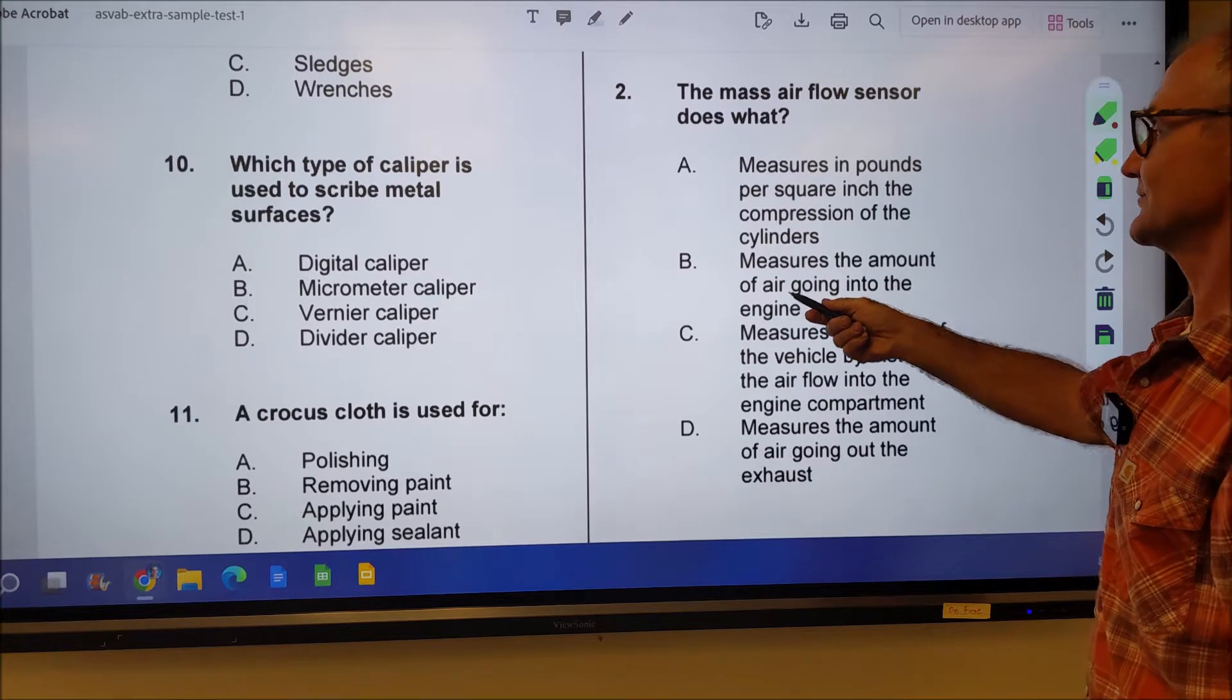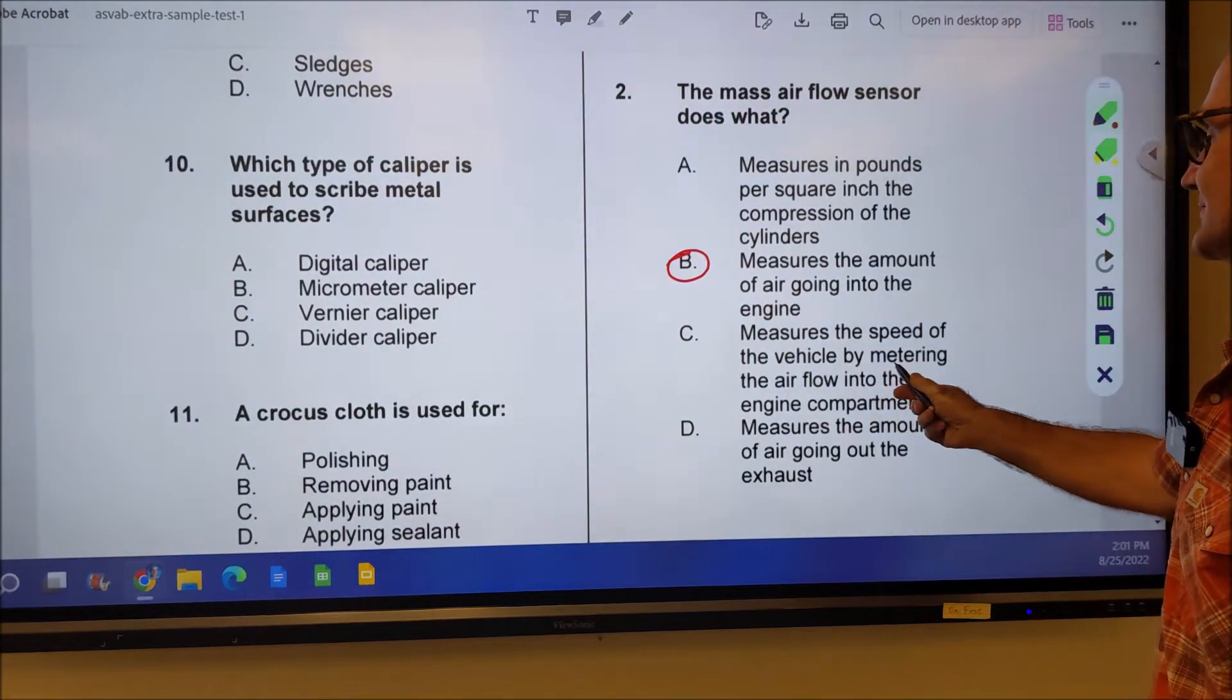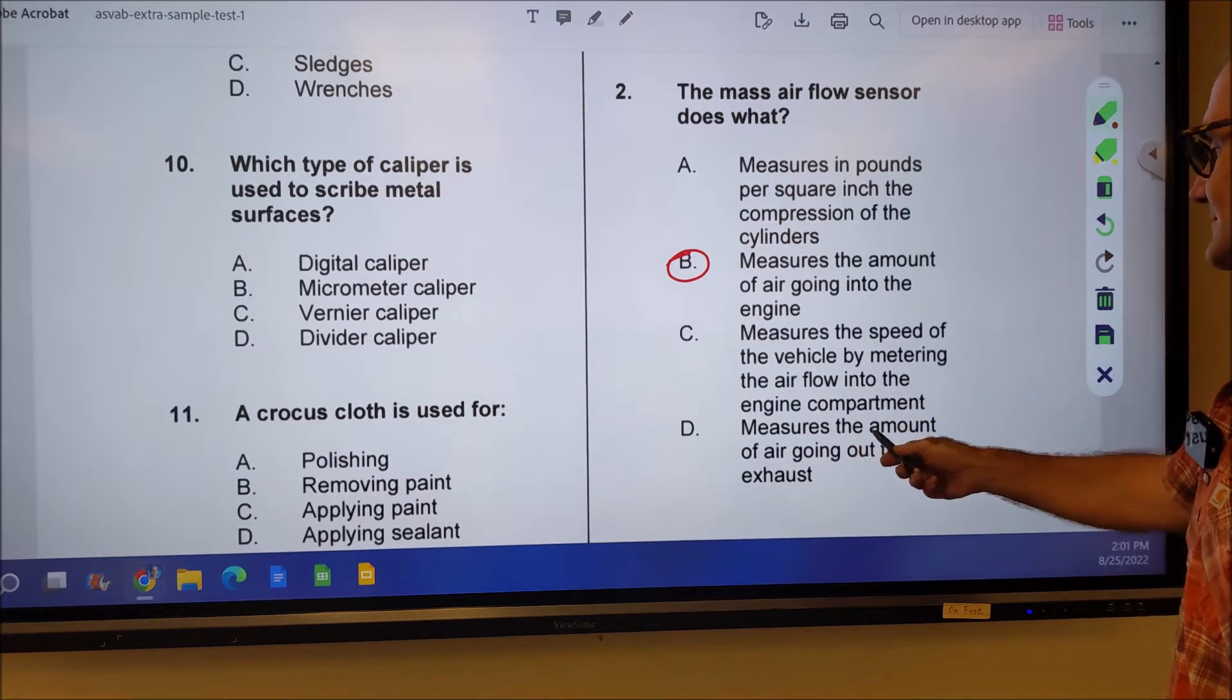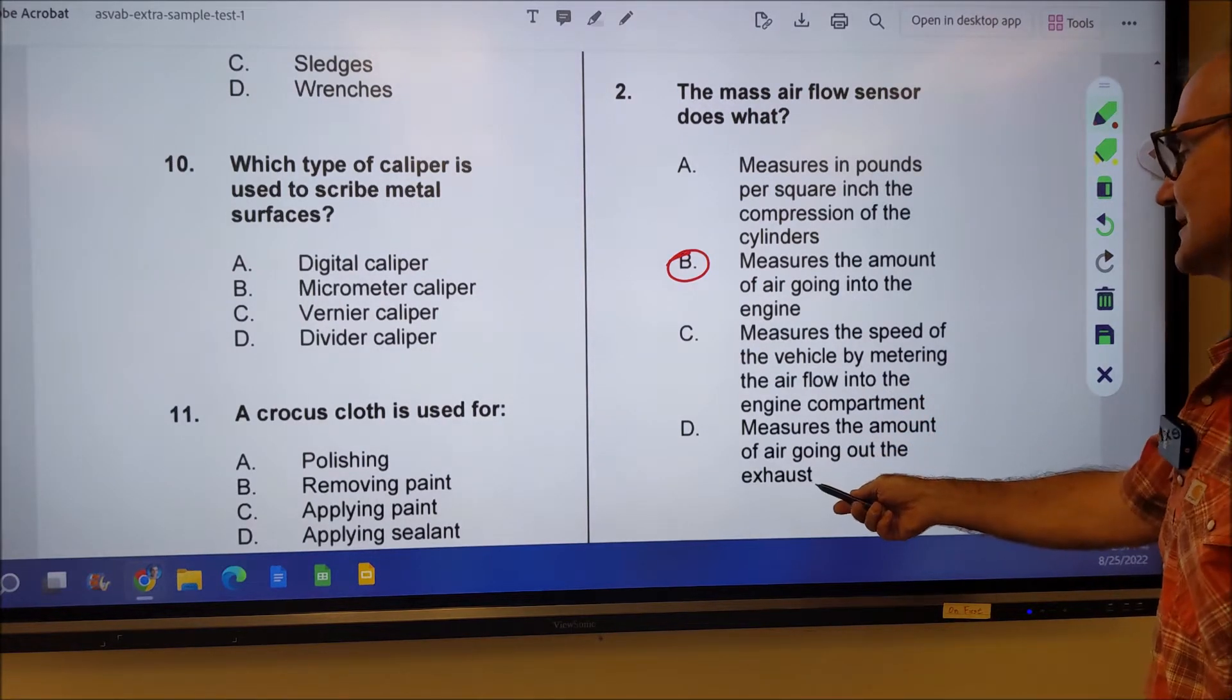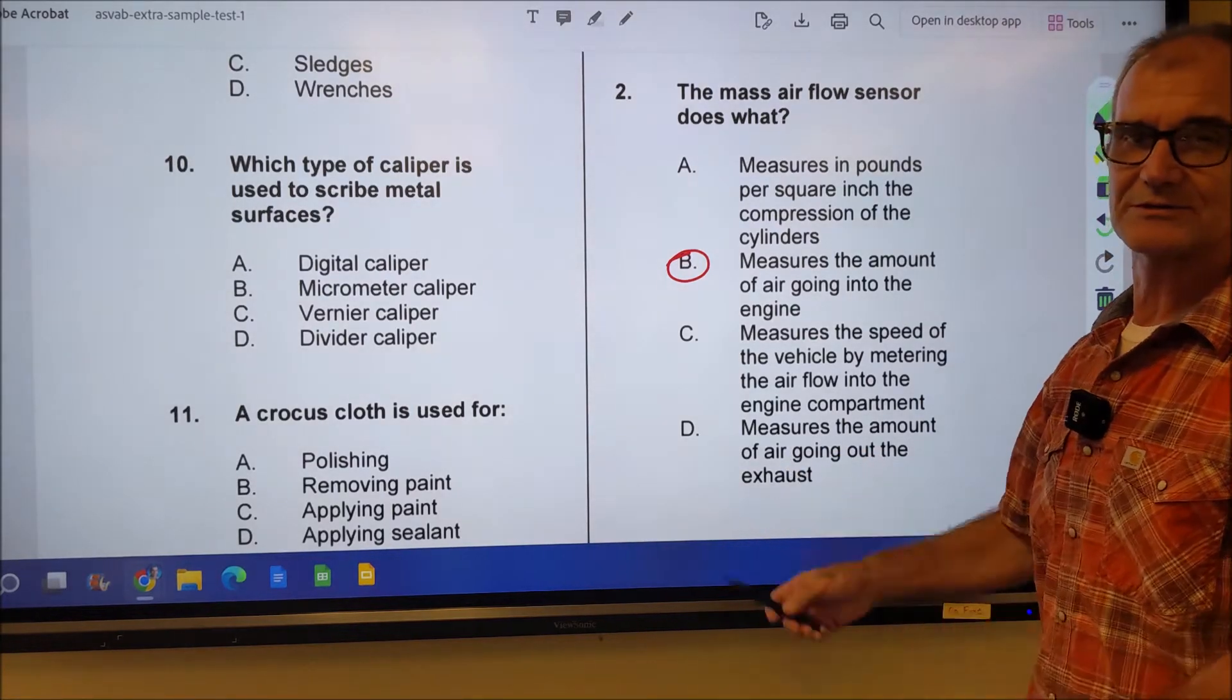It's measuring the flow of air, the mass of air. So that's the correct answer. Measures the speed of the vehicle? That doesn't even make sense. Measures the amount of air going out of the exhaust? That doesn't really make too much sense either. Why would you even measure that?